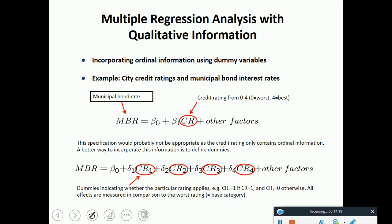Incorporating ordinal information using dummy variables. Example: city credit ratings and municipal bond interest rates. Credit rating can be 0 means worst, 4 means best. This specification would probably not be appropriate as credit rating only contains ordinal information. A better way to incorporate this information is to define dummies. You can define 4 dummies. If your credit rating is 0, dummies indicating where the particular rating applies. If your credit rating is 1, this dummy would be 1, the other dummies would be 0.